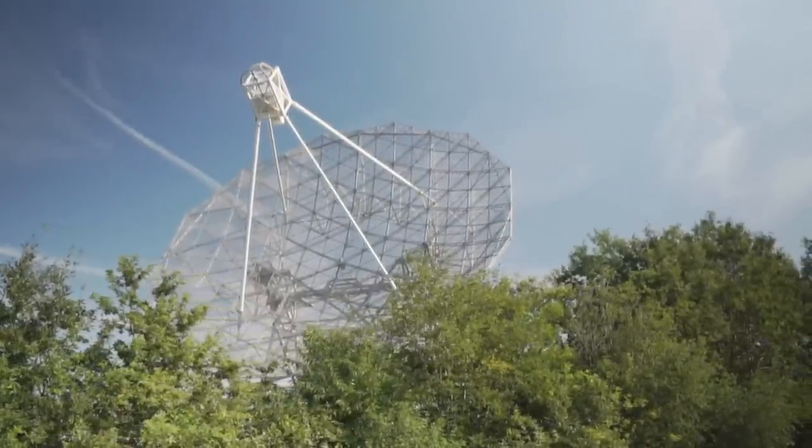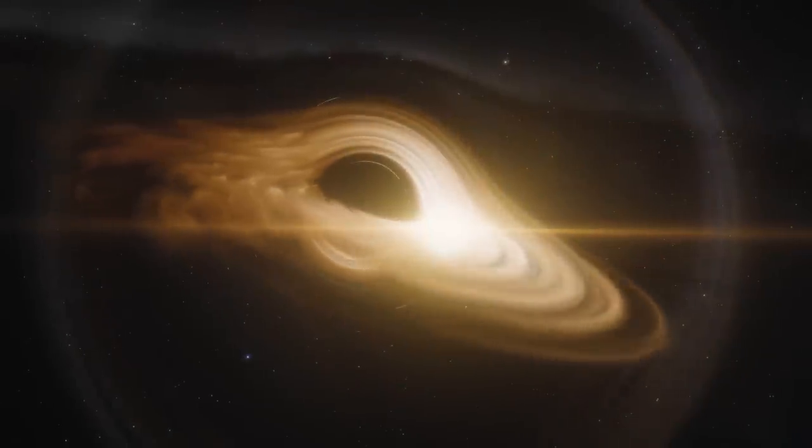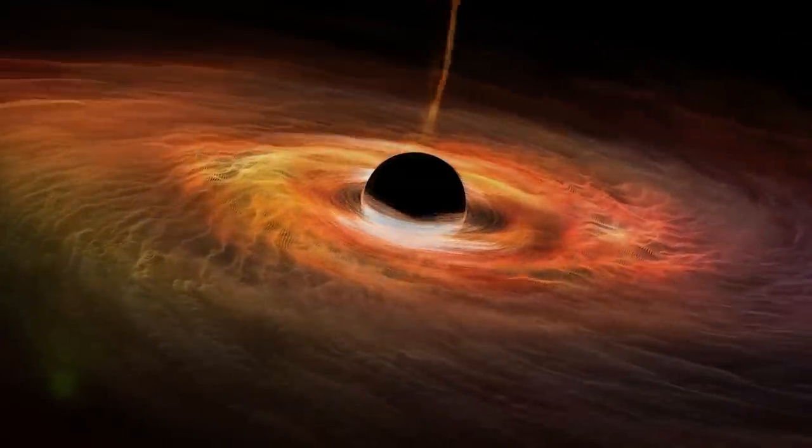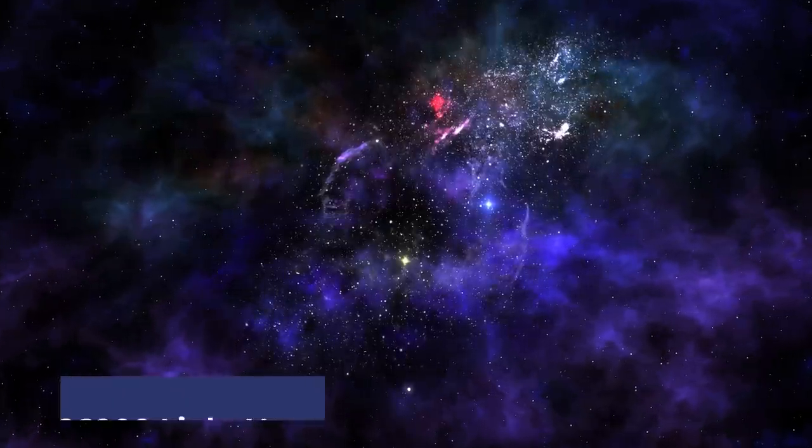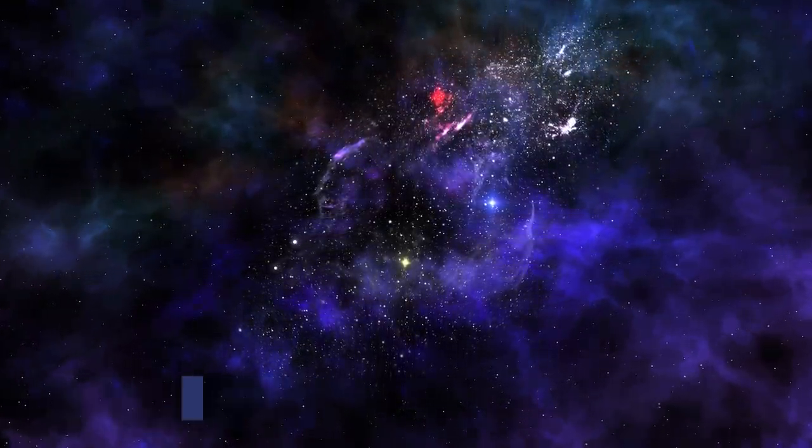Deep within our Milky Way, an awe-inspiring behemoth lurks, the Sagittarius A asterisk. This cosmic titan outweighs our sun by a staggering 4 million times, and sits an astounding distance of about 26,000 light-years away from us, in the heart of our galactic home.